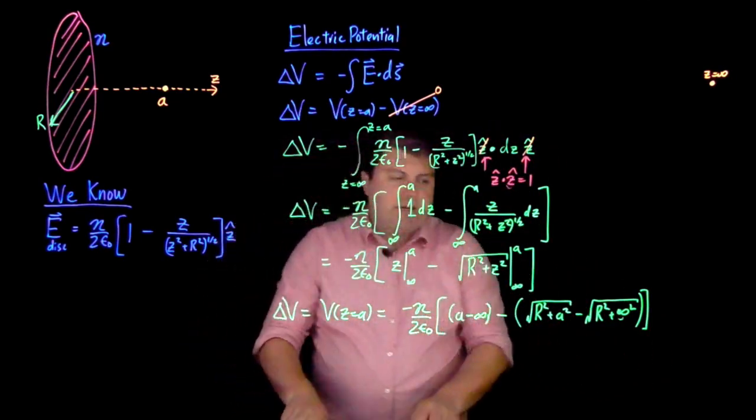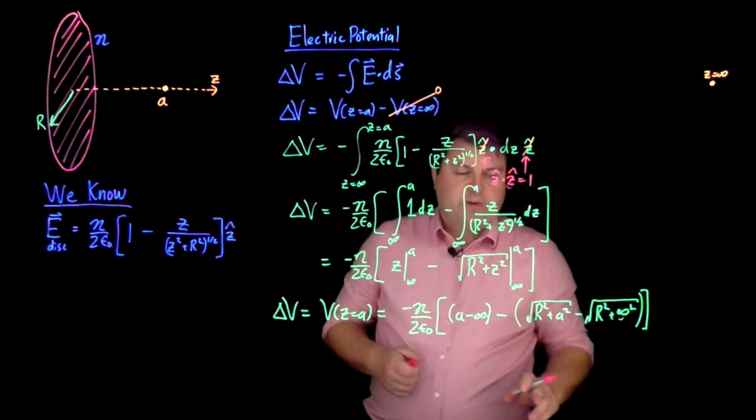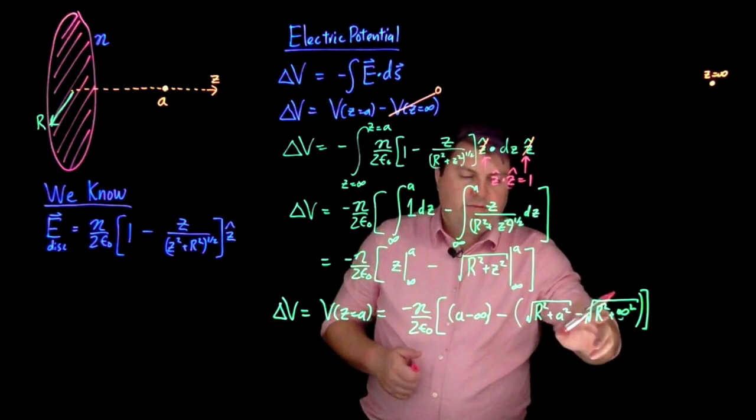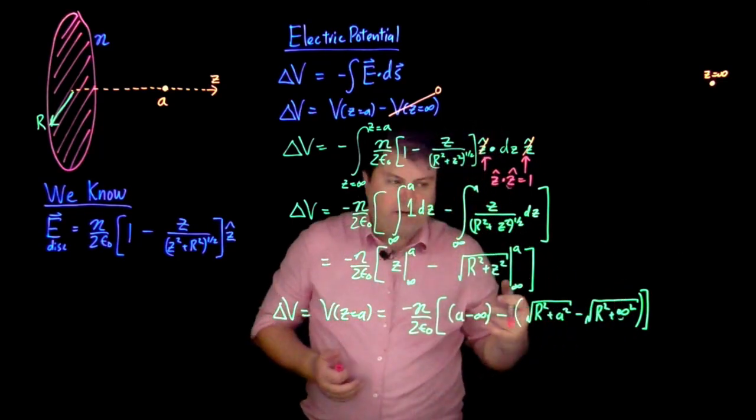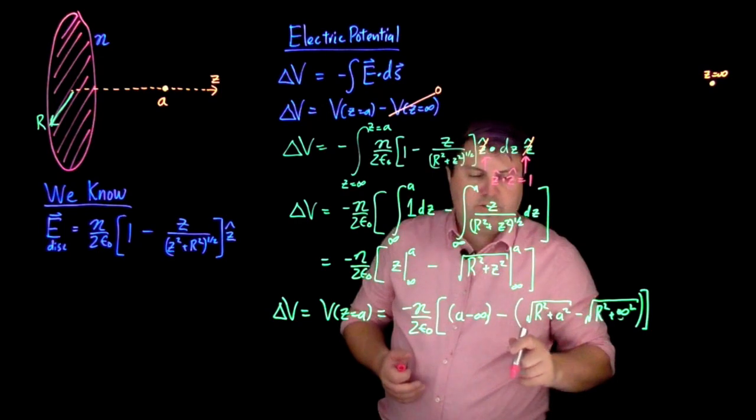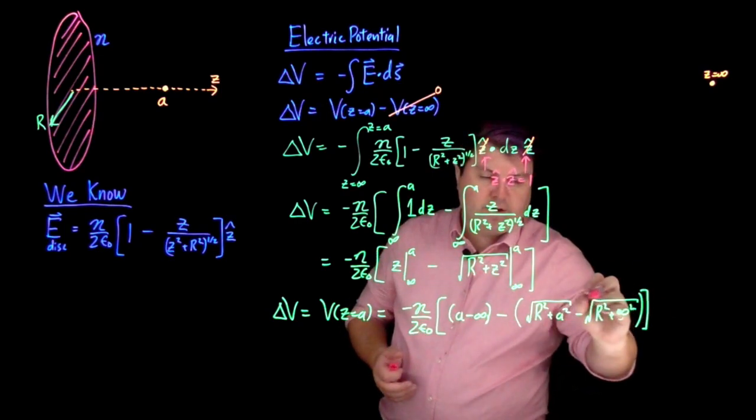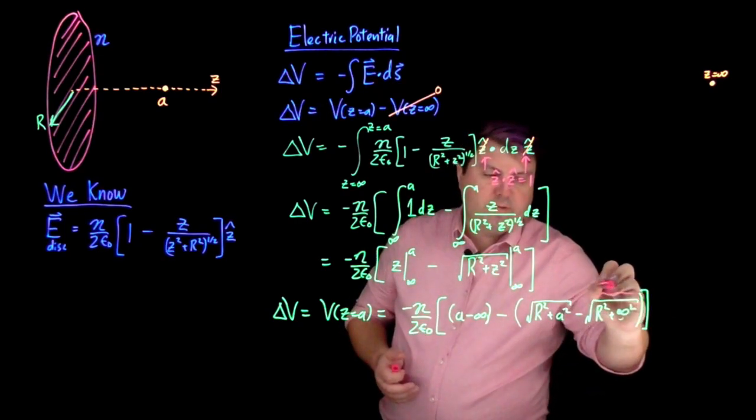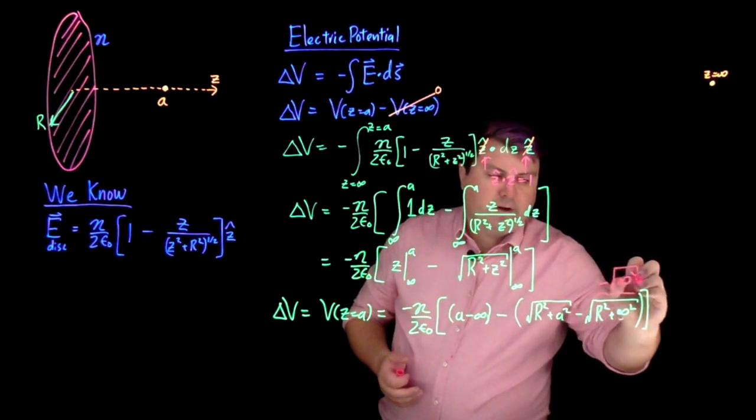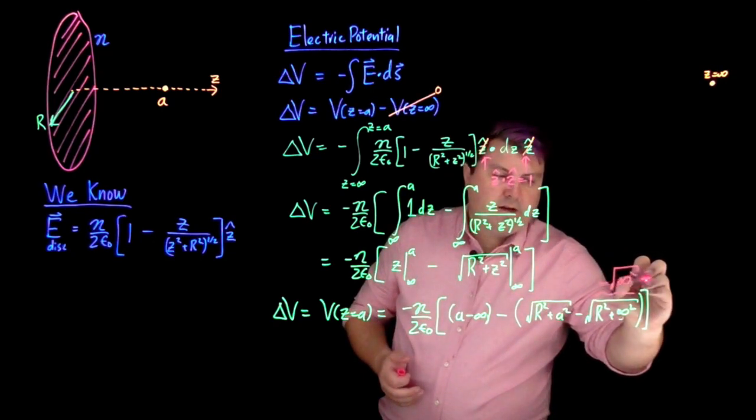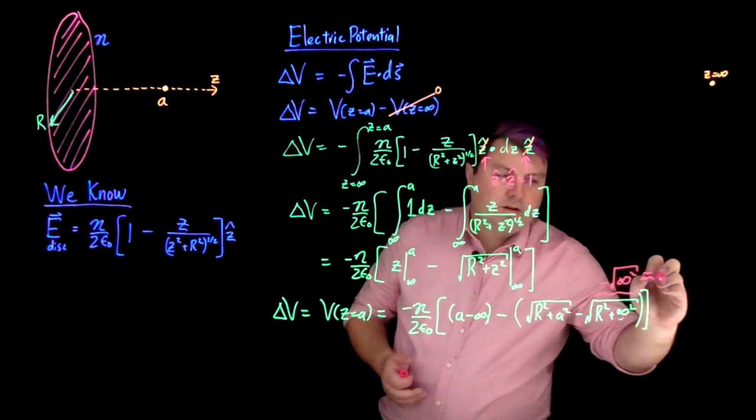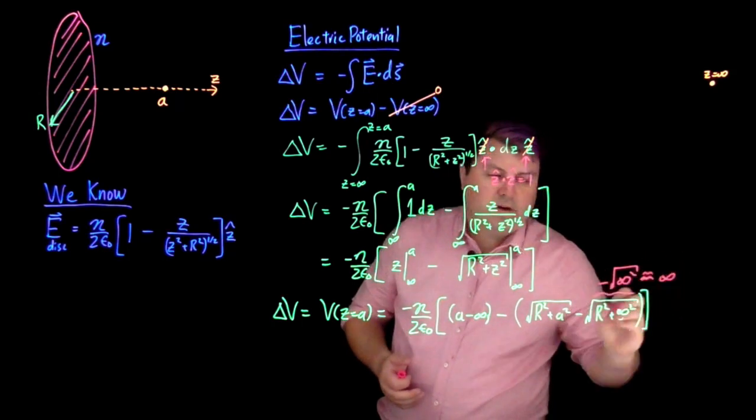Looks a little bit scary, but let's take a look at this r squared plus infinity squared. Anything plus infinity is going to be infinity, so anything squared plus infinity squared is going to be infinity squared. So this is approximately the square root of infinity squared, which then approximates or equals infinity.